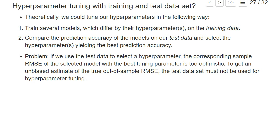What bias means will be explained in more detail in the next chapter, but we basically are too optimistic. The true out-of-sample root mean squared error will typically be larger than the one we found if we use the test dataset to select a model. So typically, one does not use the test dataset for hyperparameter tuning.